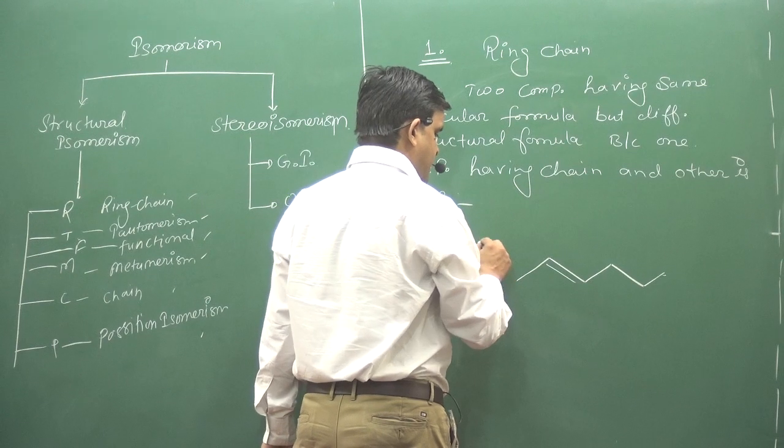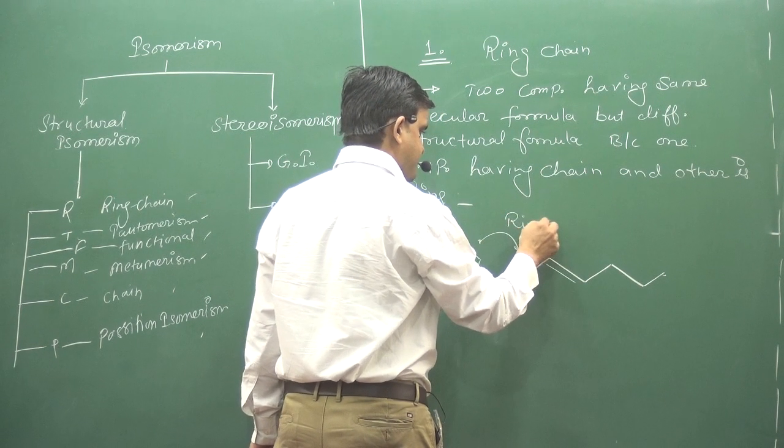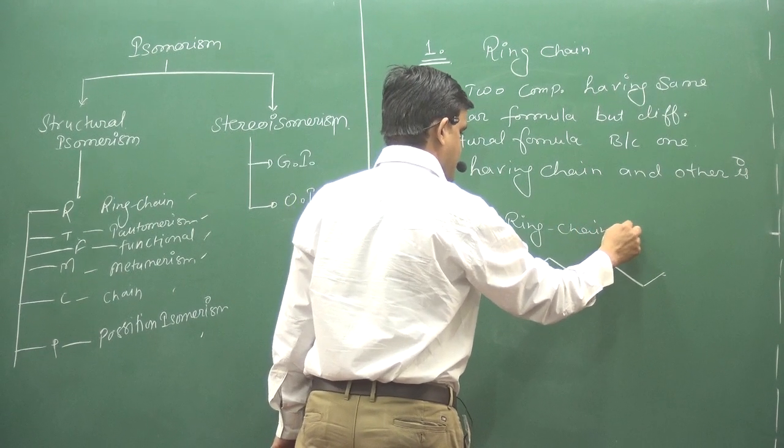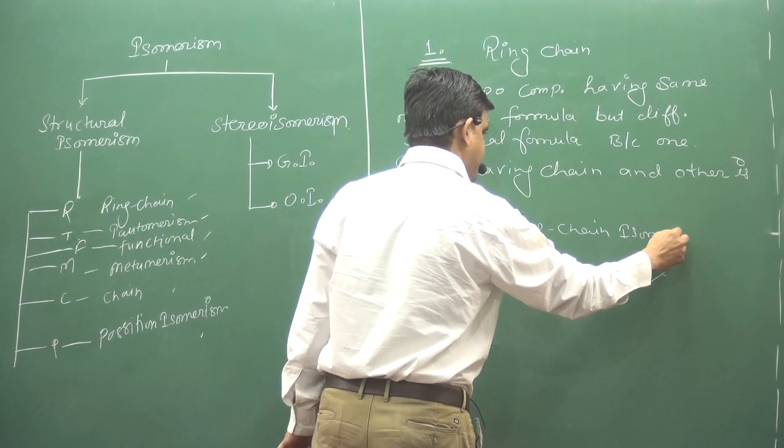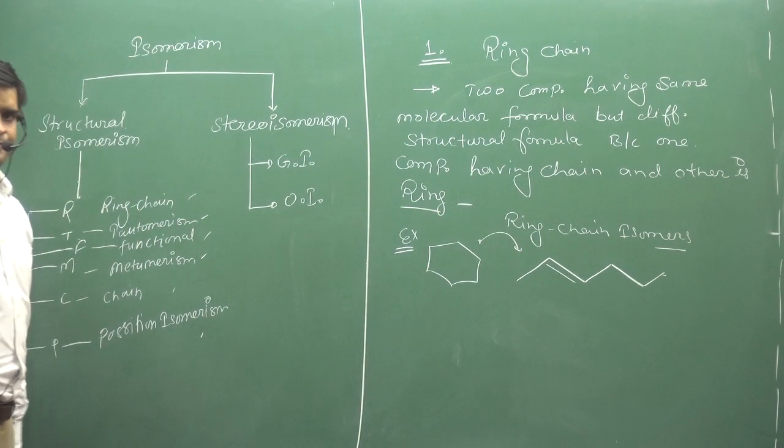So the other thing is ring chain isomers. Write it. Let's go.